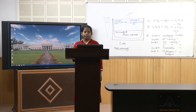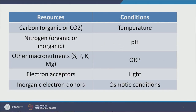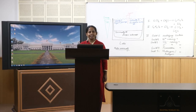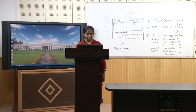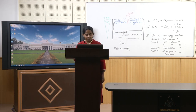So far we have covered what microbes require at the individual level — resources and conditions. Now let us look at what microbes require when many are present together in an environment. There is hardly any environment with just one microbe; usually it is a population, guild, or community. This is a good time to introduce those concepts of population, guild, and community.